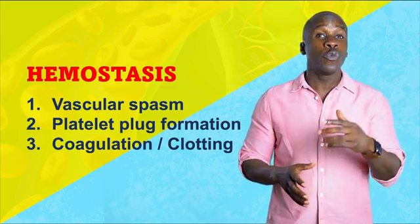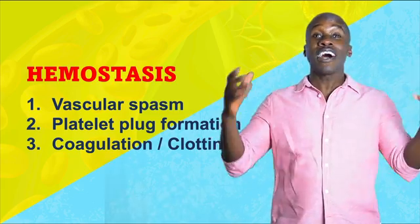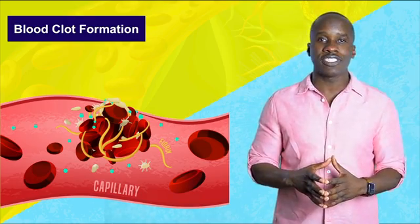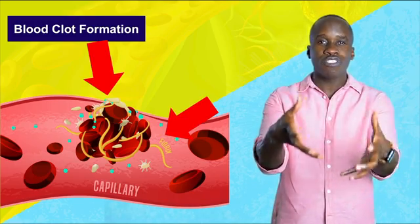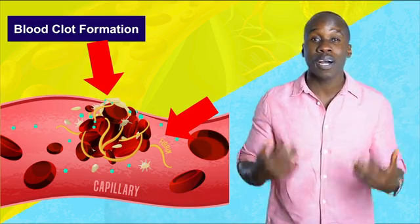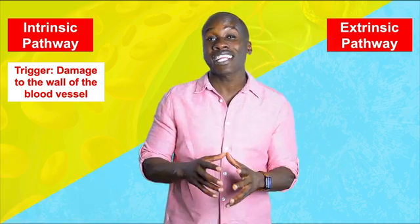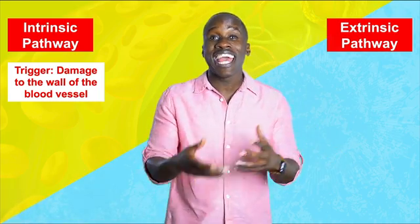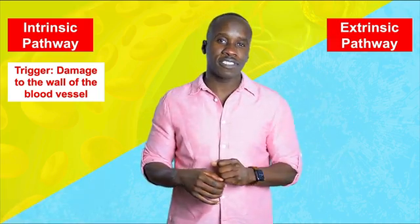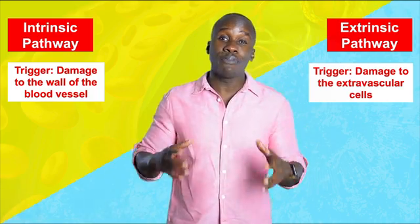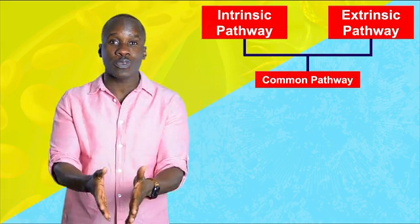For the third and final process, we have coagulation, also known as clotting. This is a process that involves a complex cascade of events with a bunch of clotting factors. The goal is to form a fibrin mesh that holds the platelet plug in place so that healing can take place as efficiently as possible. In that cascade, there are two pathways: an intrinsic pathway and an extrinsic pathway. The intrinsic pathway gets activated as a result of damage to the wall of the blood vessel — it's a pathway within the blood vessel. The extrinsic pathway happens as a result of damage to extravascular cells, those outside the blood vessels.